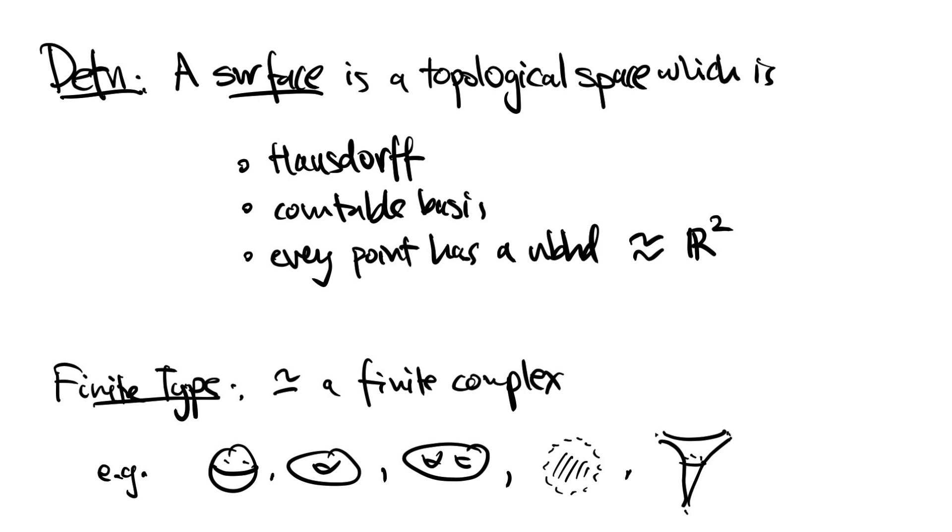Usually we're going to be paying attention to surfaces which are oriented and connected. Usually when mathematicians talk about surfaces they mean those of finite type. A surface is of finite type if it's homotopic to a finite complex.